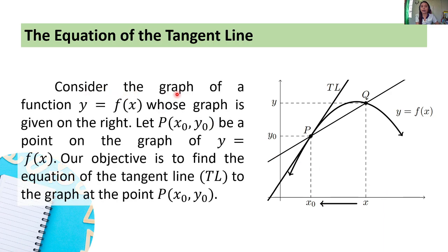Consider the graph of a function y = f(x), whose graph is given on the right. Let P of (x₀, y₀) be a point on the graph of y = f(x). Our objective is to find the equation of the tangent line TL to the graph at the point P(x₀, y₀).